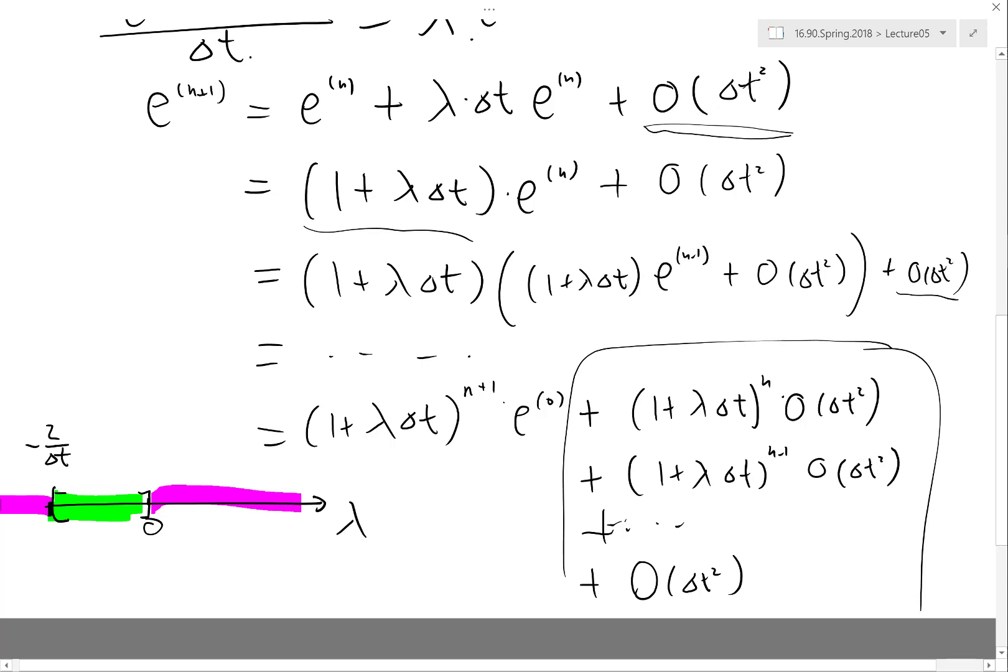You shouldn't have any lambda that is greater than zero, otherwise it won't work. You also shouldn't have lambda that is too negative—it shouldn't be less than minus two over delta t. Otherwise, what should you do? You should decrease your delta t.